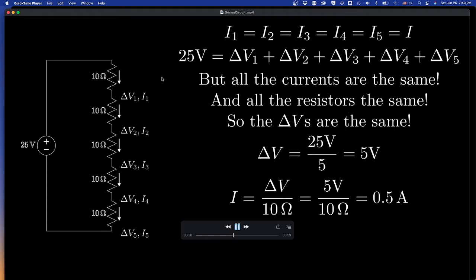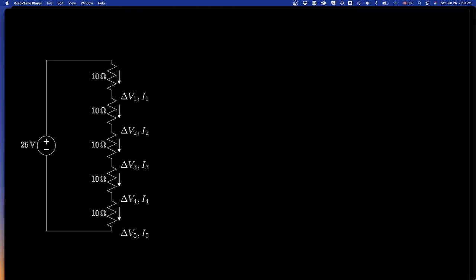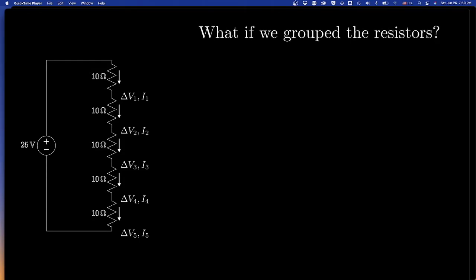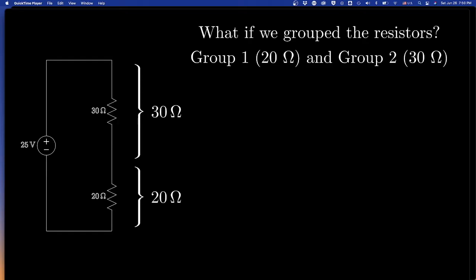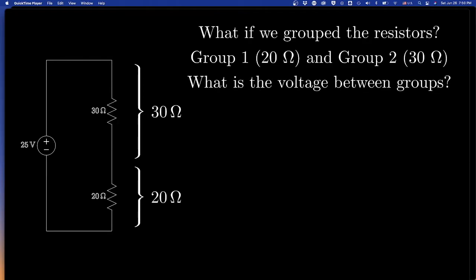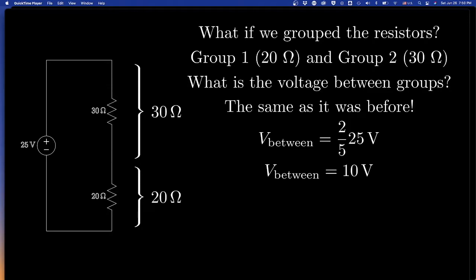The current through each resistance is just the voltage drop across that one resistor divided by its resistance — half an amp. You could also take the total resistance of 50 ohms, divide 25 volts by 50 ohms, and get half an amp. Because they're in series, each resistance has the same current. Now you could group these resistors into two groups: one group would be a 20 ohm resistance — the bottom two — and the other would be 30 ohms — the top three. Twenty ohms is two fifths of the total resistance, so the voltage is two fifths of 25 volts, which is 10 volts.